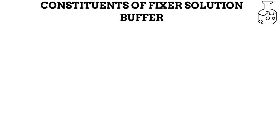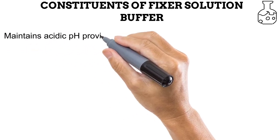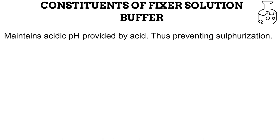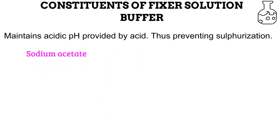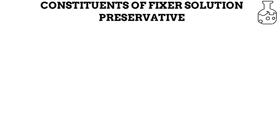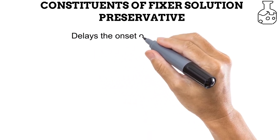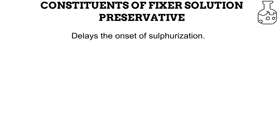Next is the buffer. Even though an acidic environment is required by the fixer solution, too acidic an environment would destroy it. A phenomenon known as sulfurization occurs at too low a pH — it is the breakdown of the ammonium thiosulfate, which renders the fixer solution useless. Sodium acetate provides a buffering effect by maintaining the pH of the fixer solution within the desired range. Another constituent is the preservative, which elongates the usability of the fixer solution by also delaying the onset of sulfurization. A good fixer solution preservative is sodium sulfite.